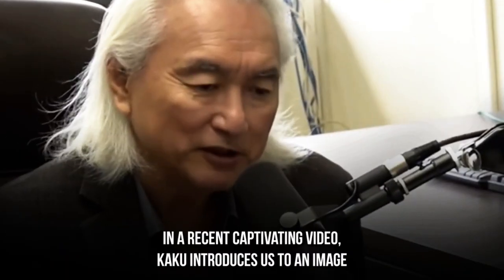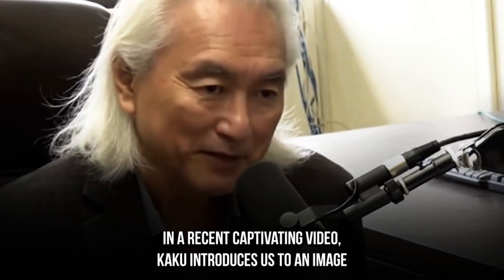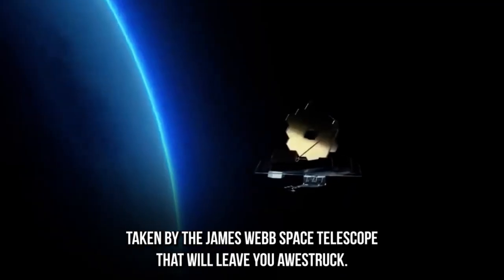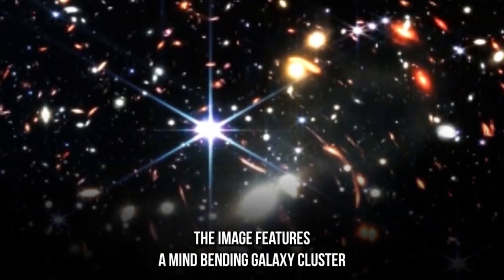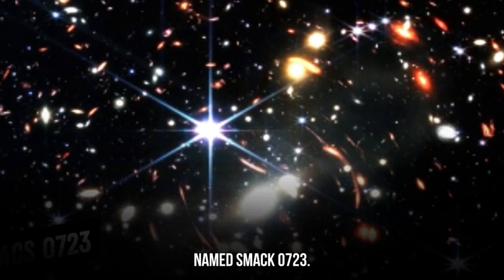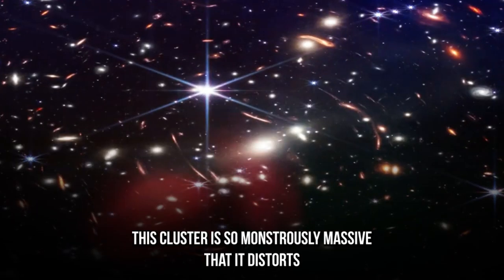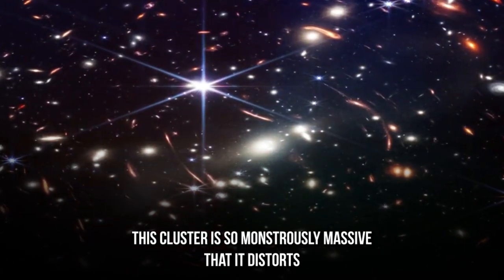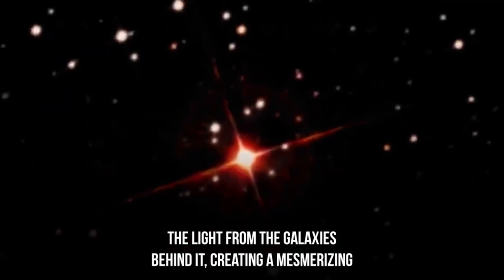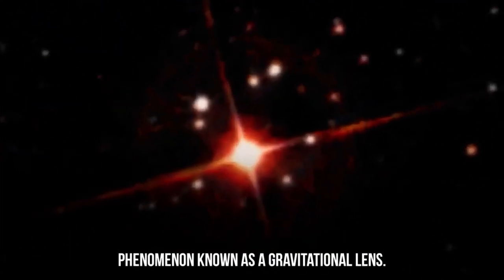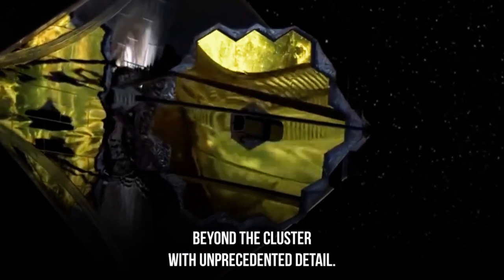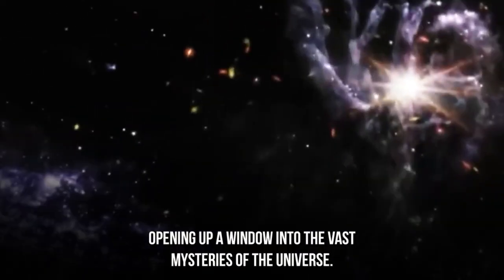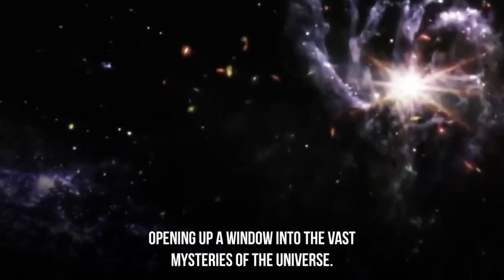In a recent captivating video, Kaku introduces us to an image taken by the James Webb Space Telescope that will leave you awestruck. The image features a mind-bending galaxy cluster named SMACS 0723. This cluster is so monstrously massive that it distorts the light from the galaxies behind it, creating a mesmerizing phenomenon known as a gravitational lens. This lens effect allows us to observe the galaxies beyond the cluster with unprecedented detail, opening up a window into the vast mysteries of the universe.